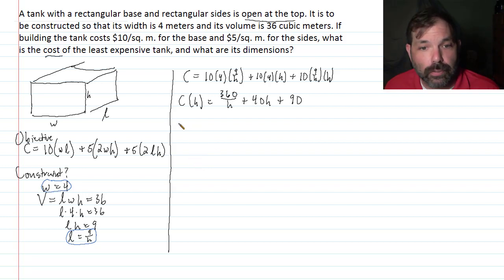So let's find the first derivative, C prime of H. Remembering that 360 over H is 360H to the negative first, this becomes negative 360 over H squared plus 40. And then the derivative of the plus 90, that goes to 0.